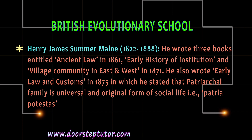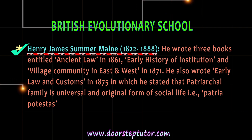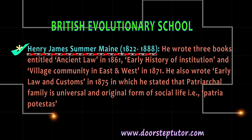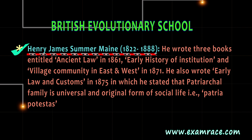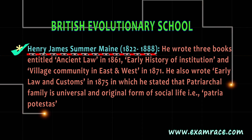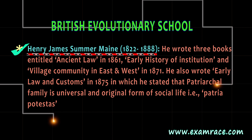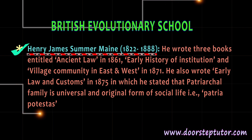Henry James Sumner Maine, also known as H.J.S. Maine, wrote a book entitled Ancient Law in 1861, Early History of Institutions, and another book Village Community in East and West in 1871. He also wrote Early Law and Customs in 1875, in which he stated that the patriarchal family is the universal and original form of social life, i.e., patria potestas.